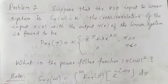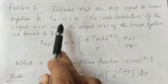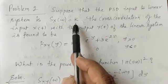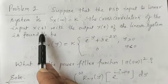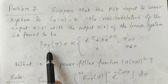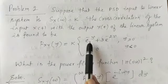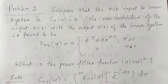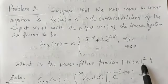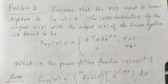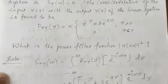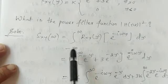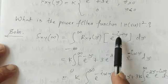The second problem: suppose the PSD of the input to a linear system is Sx(omega) = k (a constant), and the cross correlation of the input and output is given as Rxy(tau) = k · (e^(minus tau) + 3·e^(minus 2·tau)) for tau ≥ 0, and 0 otherwise. Find the power filter function |H(i·omega)|². We know Sxy(omega) is the Fourier transformation of Rxy(tau), so Sxy(omega) = the integral from minus infinity to plus infinity of Rxy(tau) · e^(minus i·omega·tau) d·tau.